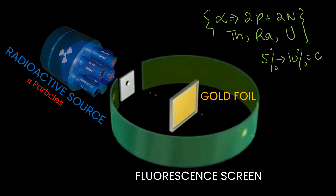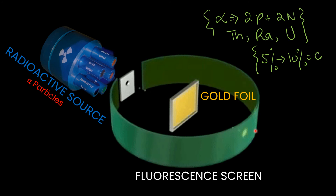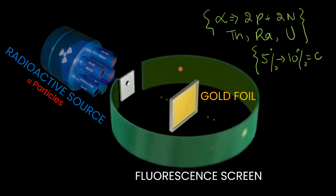Alpha particles move with high speed and have the ability to penetrate matter. When the alpha particles are incident on the gold foil, the majority of them pass through the gold foil and fall on the fluorescent screen, which means that the majority of the atom is empty. However, a few alpha particles deflected backward, which is an indication that the atom has a harder, denser part at its center known as the nucleus.